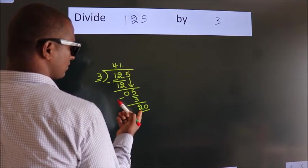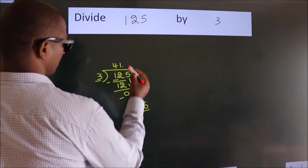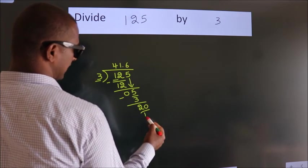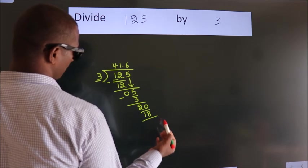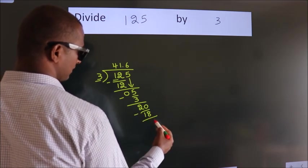A number close to 20 in 3 table is 3 6 18. Now we subtract, we get 2.